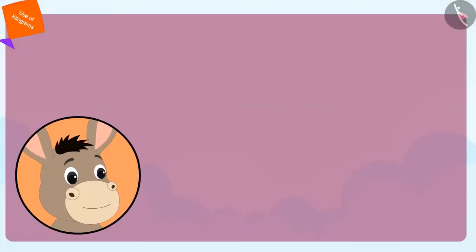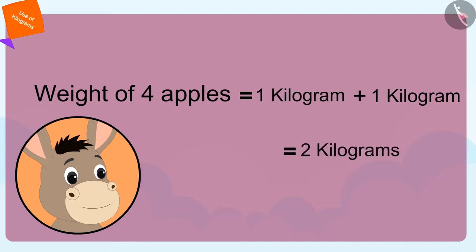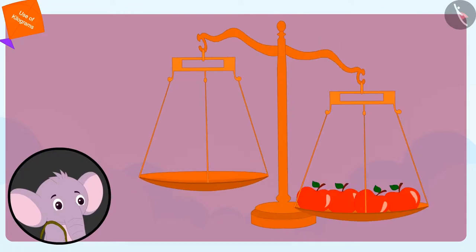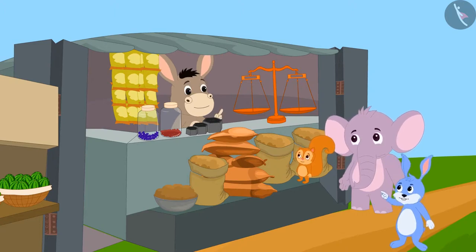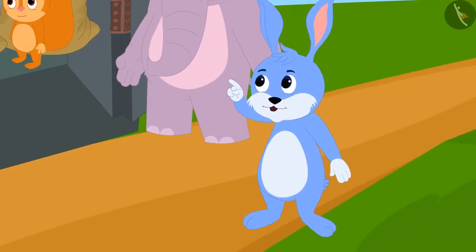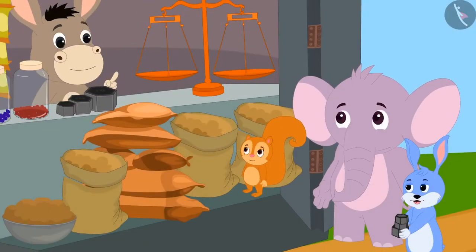Bhoala said that the weight of Chanda's 4 apples is equal to 1 plus 1, that is 2 kgs. He then weighed Appu's 4 apples in exactly the same way and found that Appu's 4 apples also weighed 2 kgs. Seeing this, Bunny understood his mistake. He told Bhoala that he too would weigh only by using a kilogram at his stall, and took some weights from Bhoala. Everyone became happy after learning about kilograms.